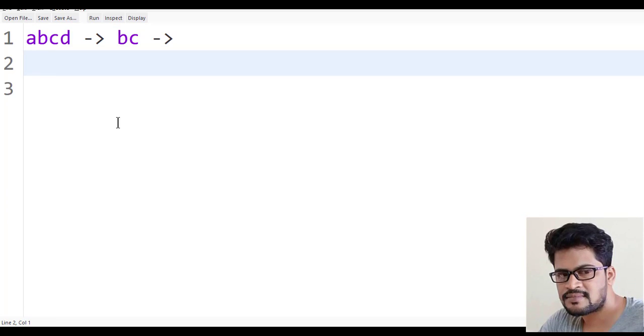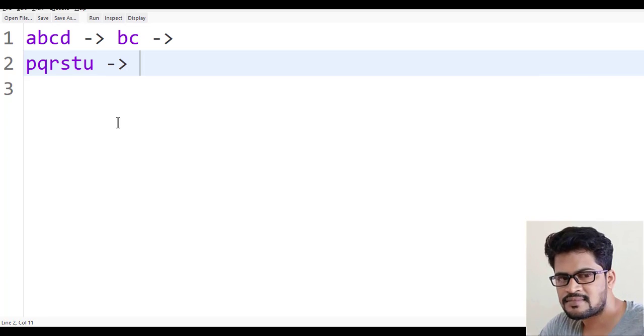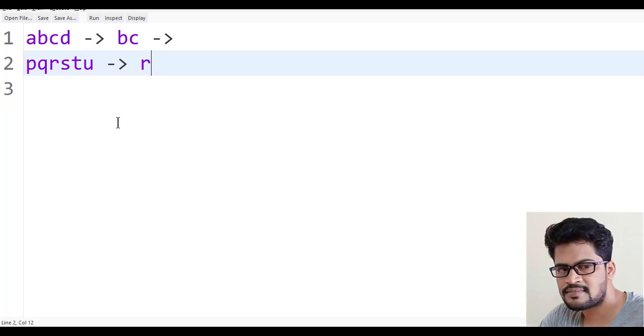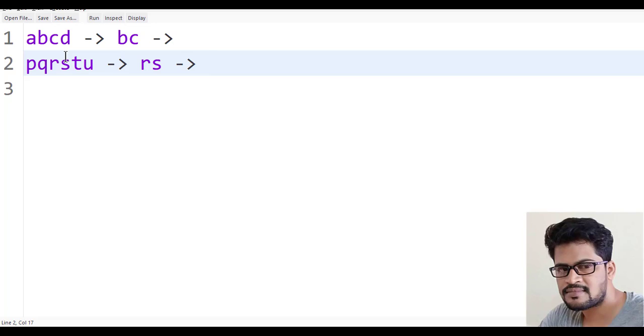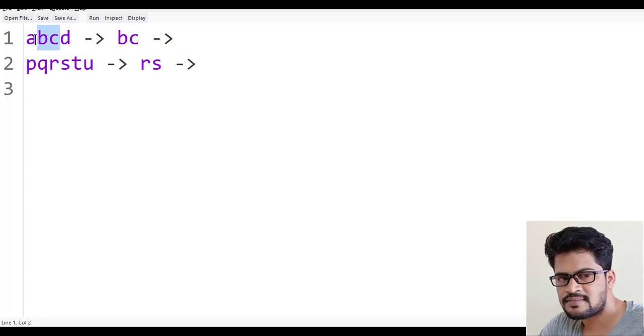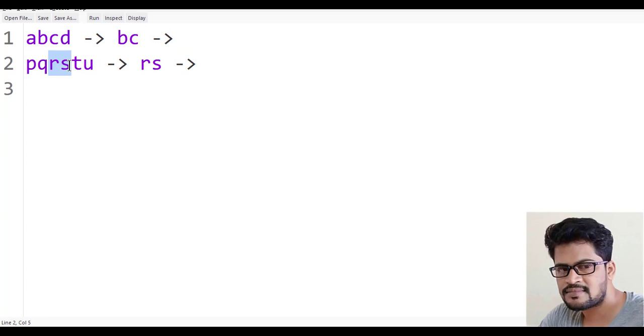One more example: p, q, r, s, t, u. In this, what happens? You have to return r, s. So now, let's understand how exactly you get the middle two characters. Here also middle two characters.